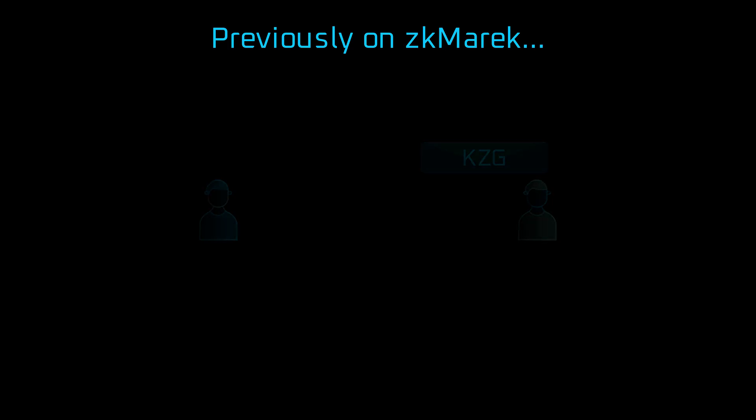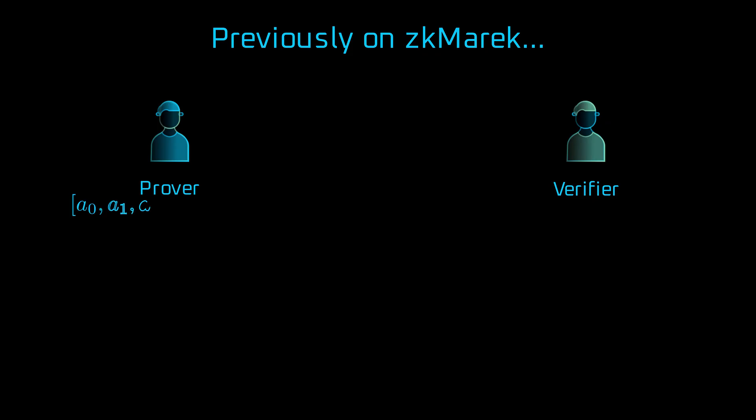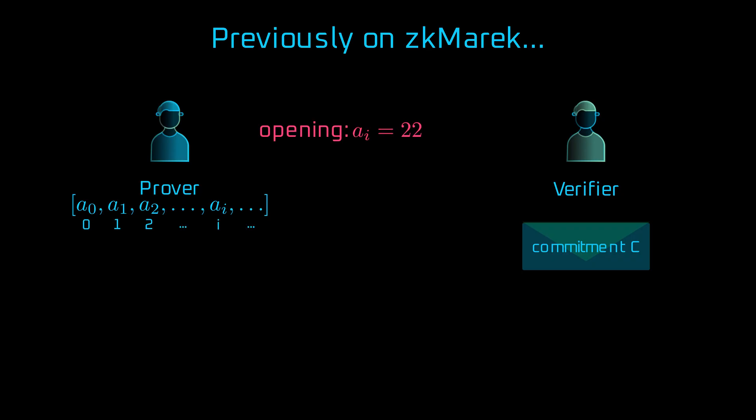Let's quickly recap the core ideas. In this case, the prover commits to a data vector without revealing it and sends a commitment C to the verifier. Now, to prove that the vector has value Ai at the certain index i, the prover generates a proof and sends it along with the opening. This proof convinces the verifier that the committed vector really has an item Ai at index i without revealing the entire vector.